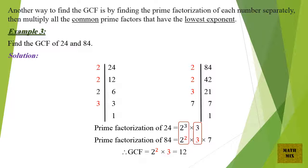Example 3: Find the GCF of 24 and 84. For 24: divisible by 2 giving 12, then by 2 giving 6, then by 2 giving 3, then by 3 giving 1. For 84: divisible by 2 giving 42, then by 2 giving 21, then by 3 giving 7, then by 7 giving 1. Prime factorization of 24 equals 2 cubed times 3.